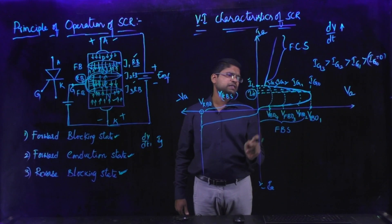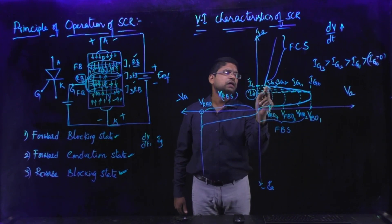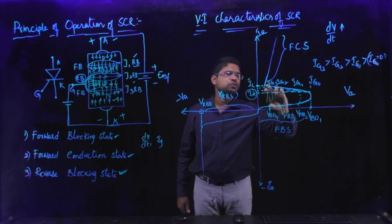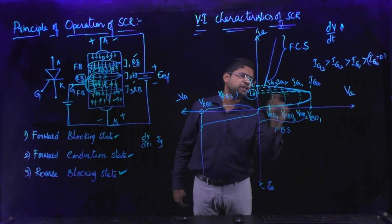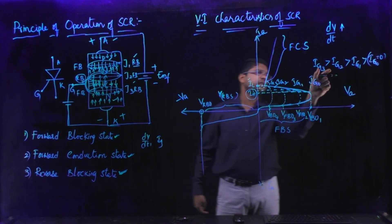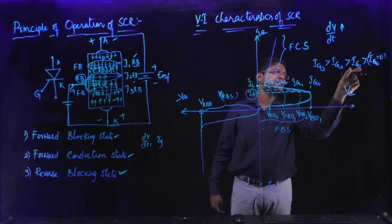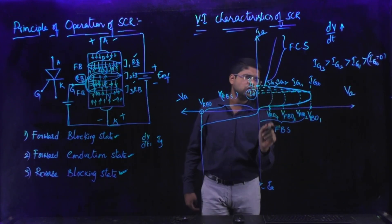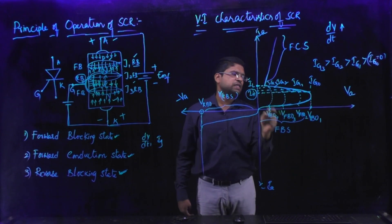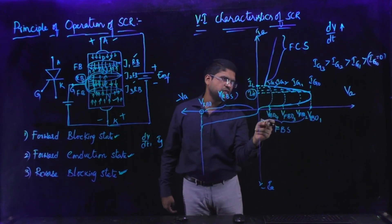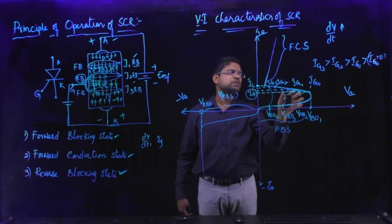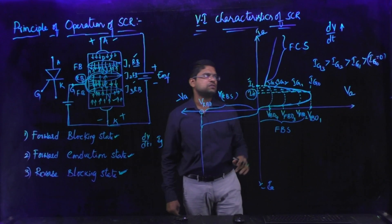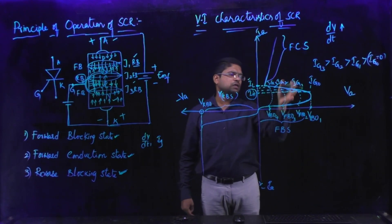This turning on may happen earlier with the help of gate signals IG3, IG2, and IG1. At a particular instant, if we apply a gate current of a certain magnitude, that magnitude of gate current decides how early the device is turned on. Here IG3 is greater than IG2, which is greater than IG1, which is greater than IG0. So whenever gate current is increased, it is seen that the forward breakover voltage is decreased. With the help of the gate signal the device is turned on.